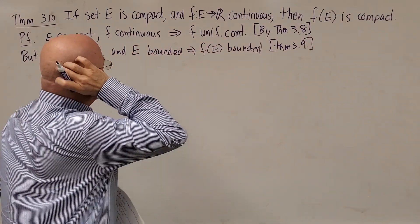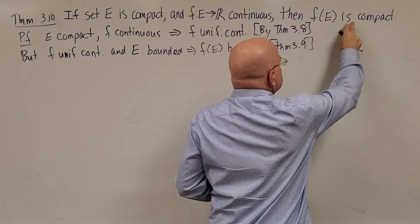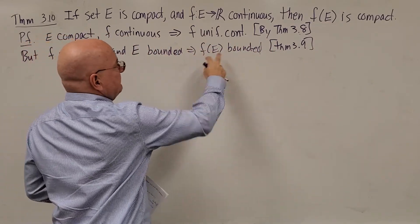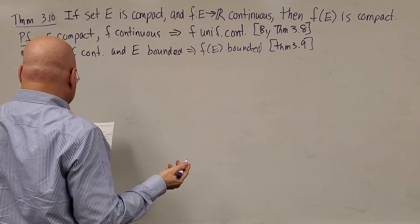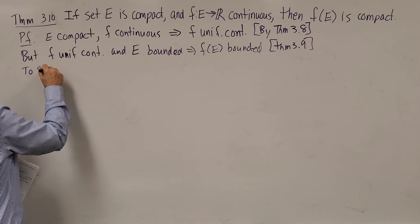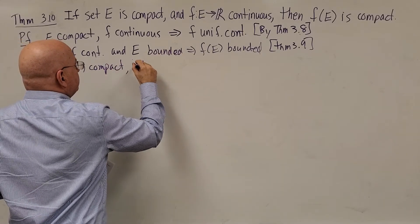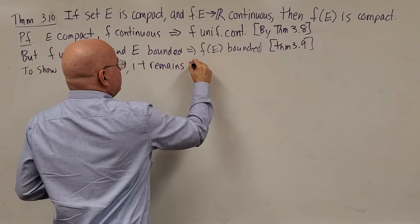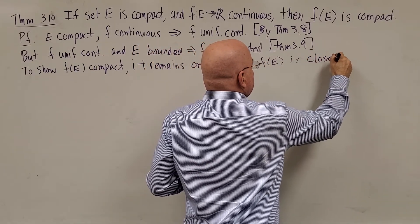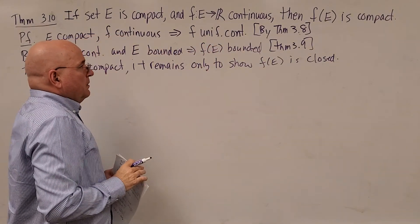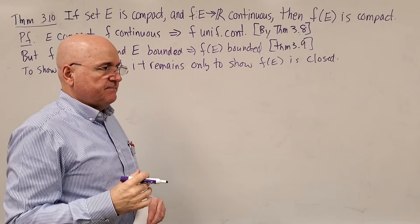So we're halfway done. We're trying to prove F(E) is compact, meaning closed and bounded. We've already shown F(E) is bounded, so all we need to do now is show F(E) is closed. It remains only to show F(E) is closed and we'll be done with the proof. The definition of a closed set is that it contains all of its accumulation points.